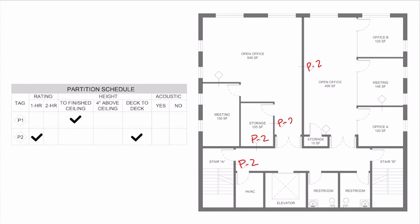There's one other partition tag that is going to be P2, and that is the storage unit that is greater than 100 square feet. We have another storage unit right nearby, but that one is only 15 square feet, so it's actually going to be P1 — it does not need to be a fire rated wall. Everything else: a wall dividing a meeting room and an office, and a wall dividing a meeting room and an open office, don't necessarily need to be fire rated, so those are P1.